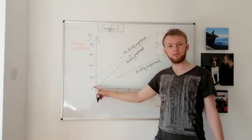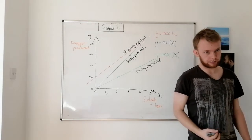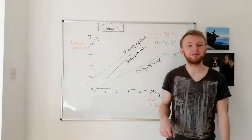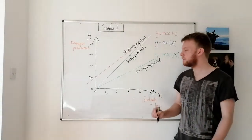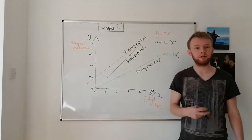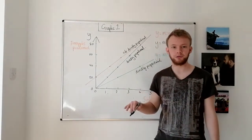Because it doesn't go through the origin, it's very easy to tell that it's not going to be directly proportional. For a directly proportional relationship, it needs to be a line, it needs to be a linear relationship, but also it needs to go through the origin. The gradient needs to go through the origin. Otherwise it's not a directly proportional relationship.